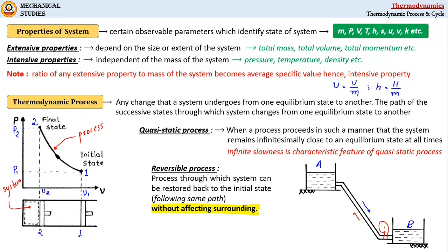If we look at the system, the system comprises tank A, tank B, and the pipe connected between these two tanks. Anything outside of this system will be the surrounding.